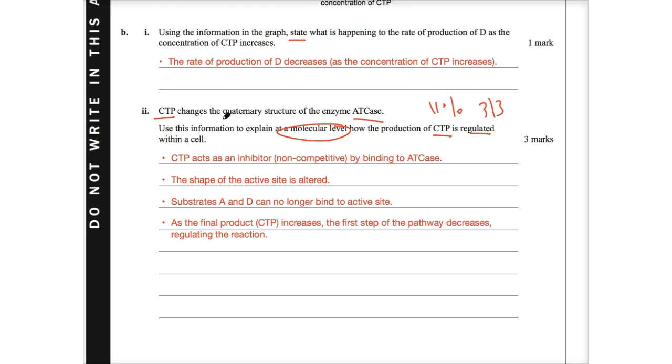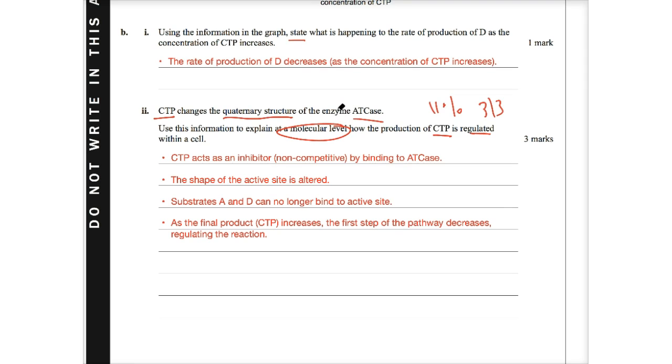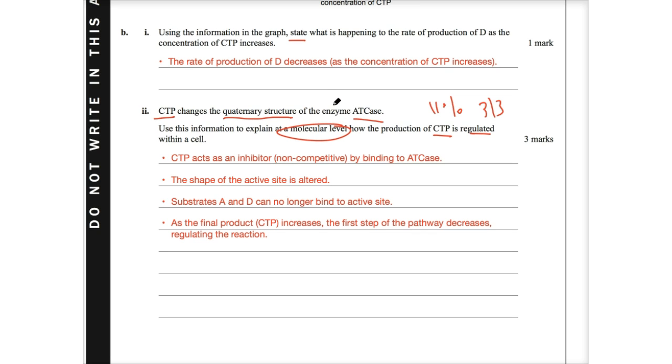Now, the big thing here is you ought to note that the quaternary structure is actually changed. And if the quaternary structure is being changed, it means we've got some form of inhibition that's occurring. So the big thing that CTP would do is it would actually be an inhibitor. And if it's doing so, it's not actually having direct competition, so it's not a competitive inhibitor. I'd be thinking it's a non-competitive inhibitor. But the big thing here is if it decreases the activity of that particular enzyme, it means something's happening to the active site. And we know when the active site changes its shape, the substrates can no longer bind to the active site, and therefore cannot catalyze the reaction we began at the start, which was A plus B going to D.